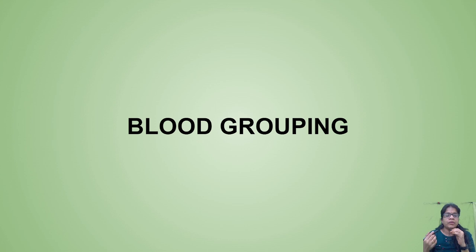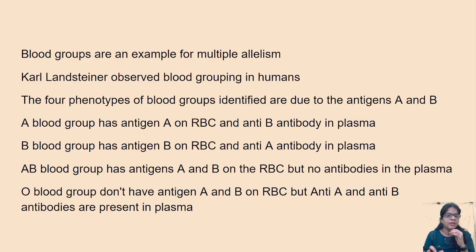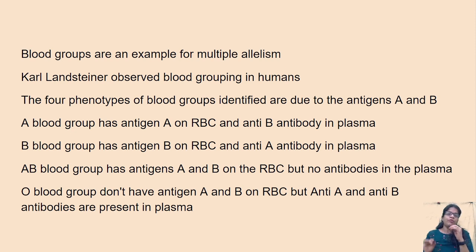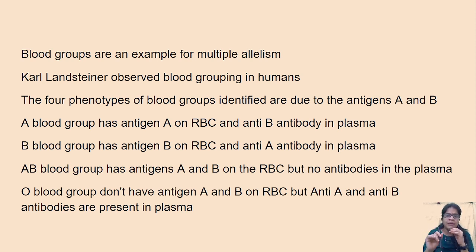Blood groups are the classic example for multiple alleles. Each and every blood group is decided by four different alleles on the chromosomes — it could be A, it could be B, it could be AB, and it could be O. Karl Landsteiner is the person who observed blood grouping in humans. The four phenotypes of blood groups are identified due to antigens A and B. Antigens are present on the surface of your red blood cells and antibodies are present in the plasma of your blood.